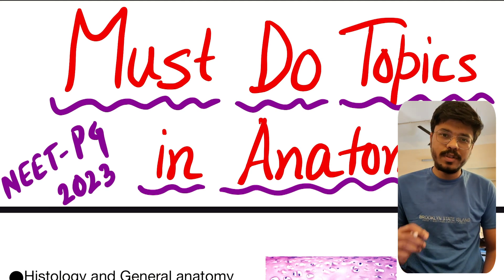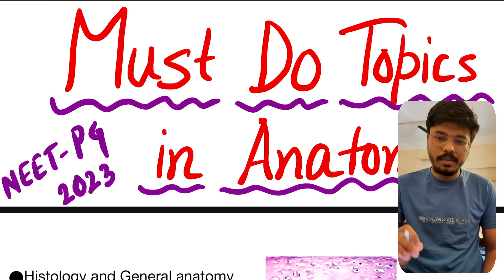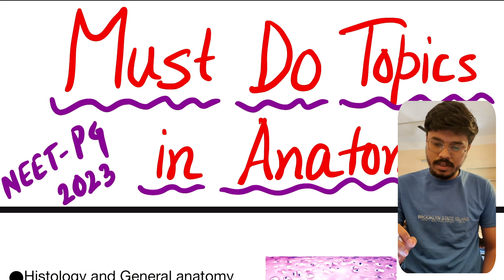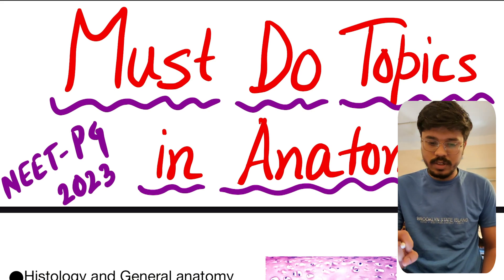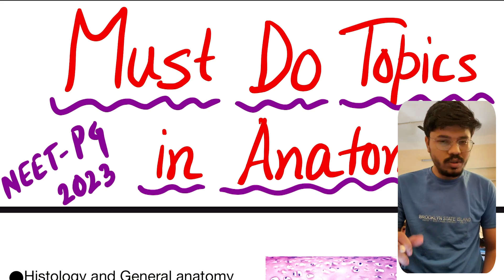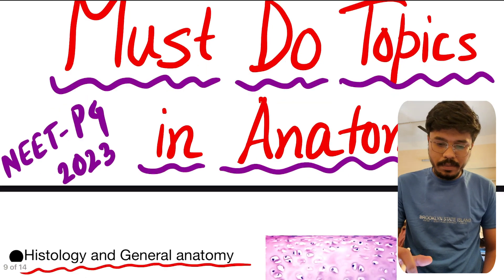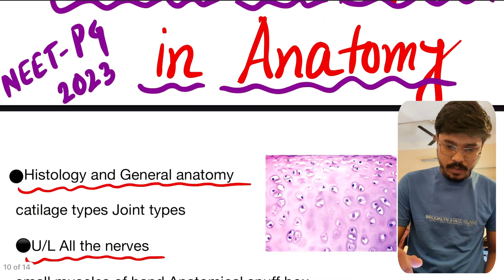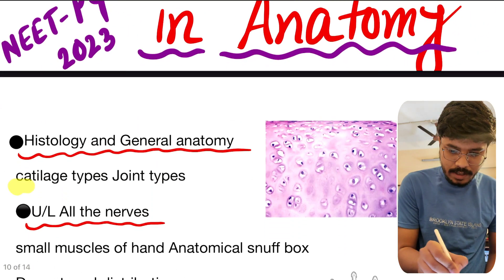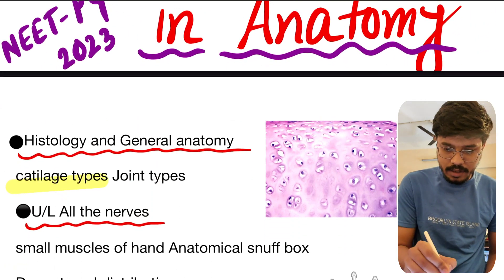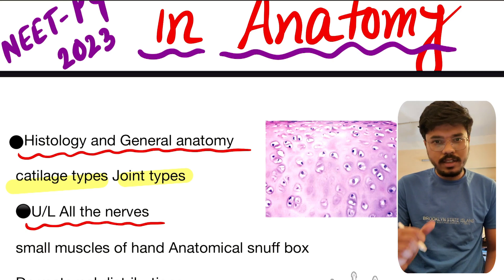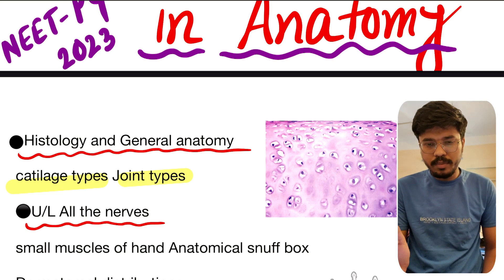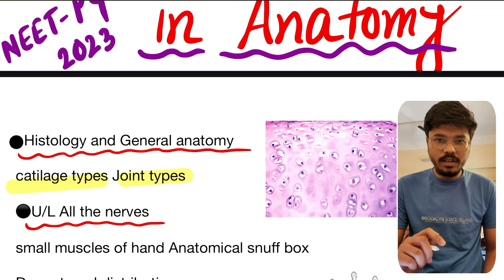In this video we talk about must-do topics in anatomy. These are extremely important for NEET PG 2023. Let's begin from histology: cartilage types and joint types — all types of cartilage including hyaline cartilage, elastic cartilage, and fibrocartilage, and all the joint types.